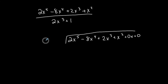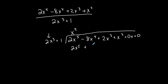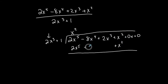Anytime I'm missing terms I need placeholders. Divided by 2x³ plus 1. I start by going 2x³ into 2x⁵: what times 2x³ gives me 2x⁵? x². So x² goes on top. x² times 2x³ is 2x⁵ — those match. x² times 1 is plus x², which lines up under the x² column. I have no fourth-degree or third-degree terms from this multiplication. I subtract, so that negative distributes to everything: minus 2x⁵, minus 0, minus 0, minus x².